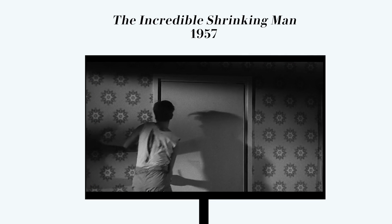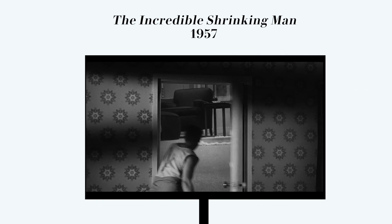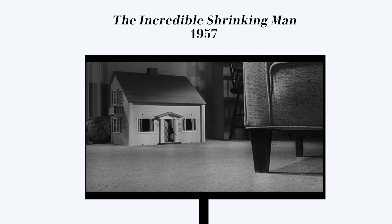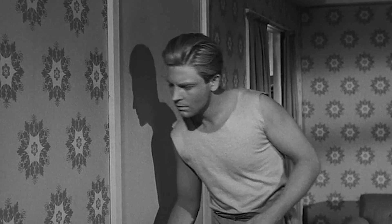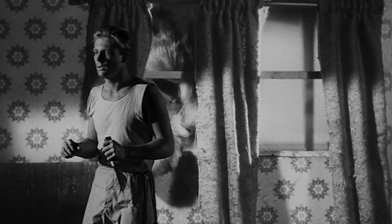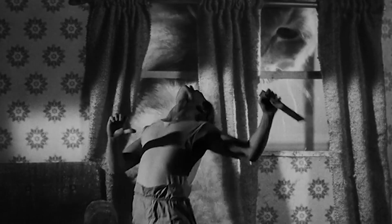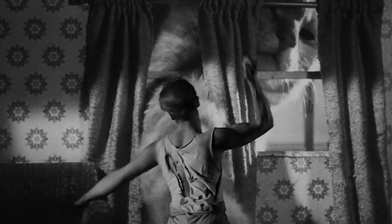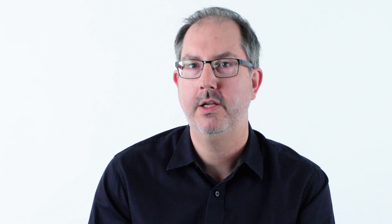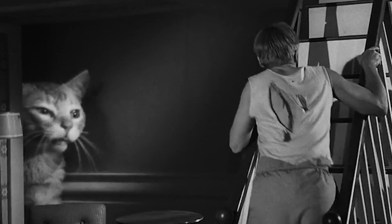1957, The Incredible Shrinking Man. Now the depth of field is more controlled. What's interesting about this scene — also involving a cat — the focus is deeper, and it's a better match to the shots showing Grant Williams. You begin to feel that the scene is becoming more of a whole.